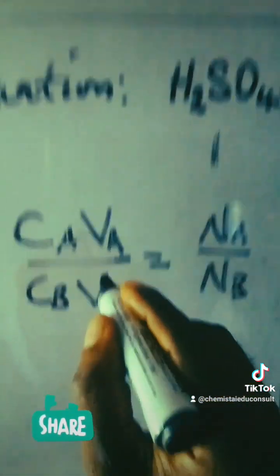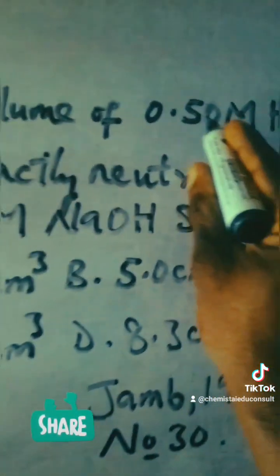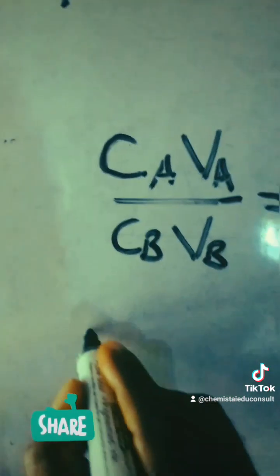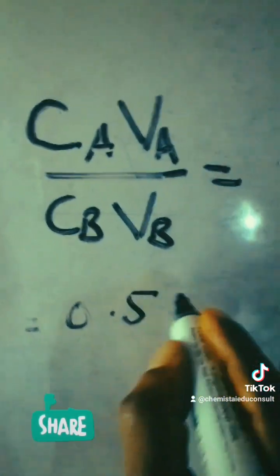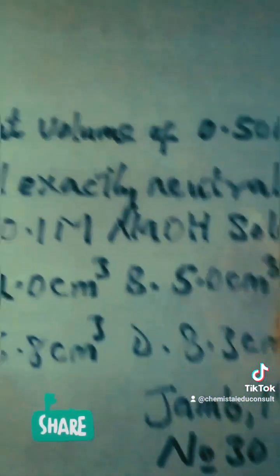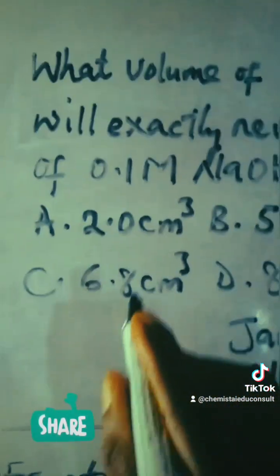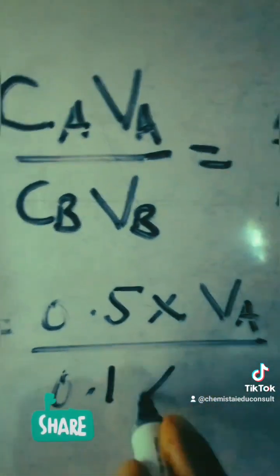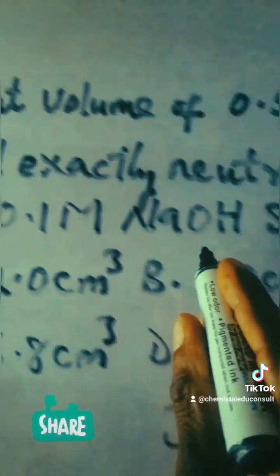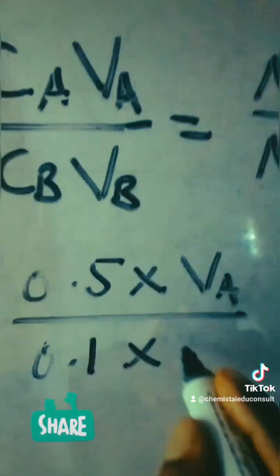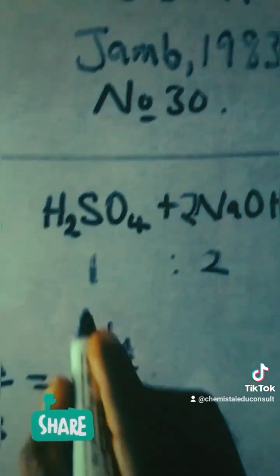Now we plug in the figures. Concentration of the acid was given as 0.5, so we have 0.5 times VA (volume of acid) over concentration of base (0.1) times volume of the base (20 cm³). This equals number of moles of the acid from the balanced equation, which is 1, over number of moles of base, which is 2.